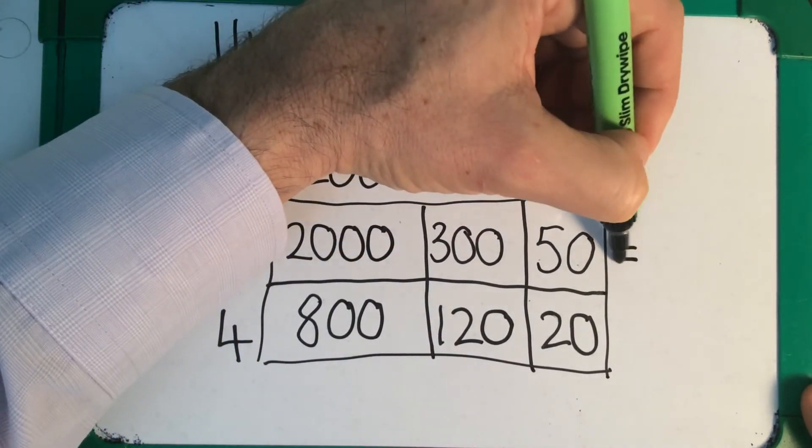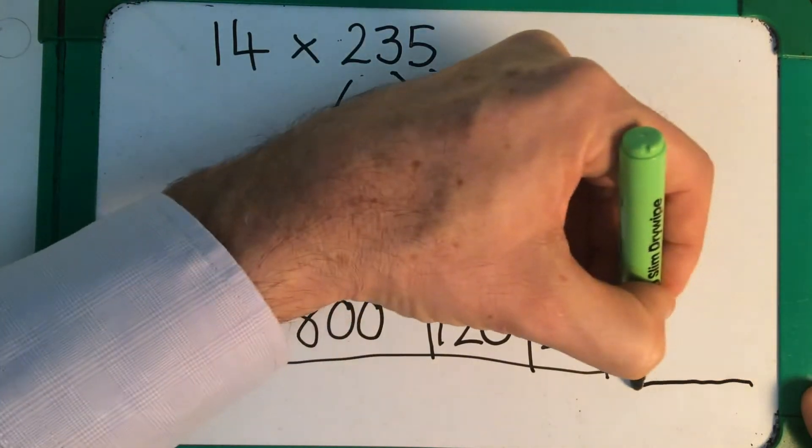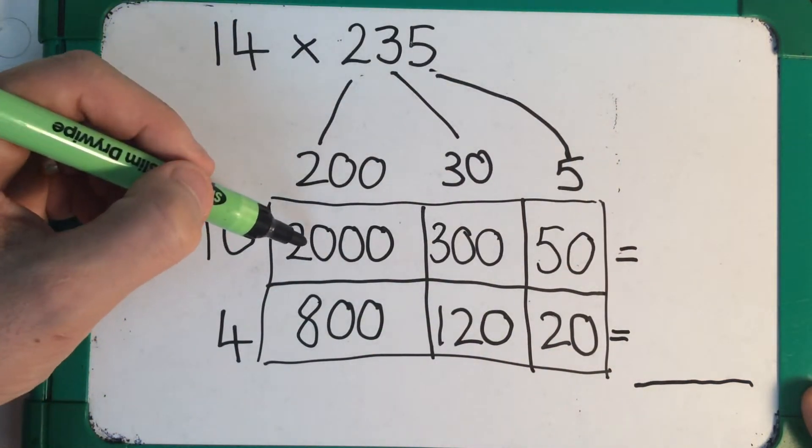Now I'm going to add across and then find the total at the bottom. So 2,350.